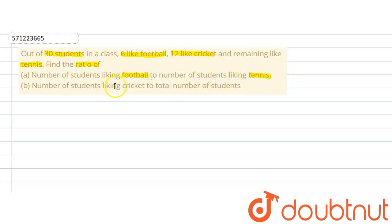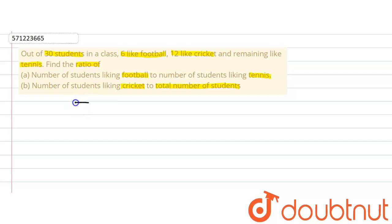Part B says: number of students liking cricket to total number of students. So we are supposed to find out the ratio in both parts. First of all, let's write down what has been given in the question. We are given that total number of students, let's denote that by T, is equal to 30 students.